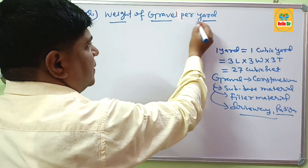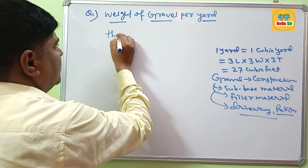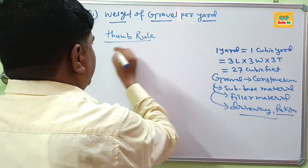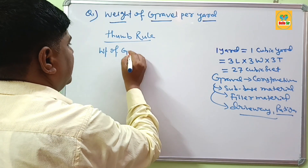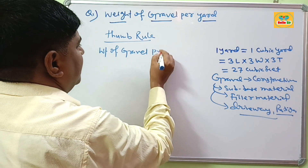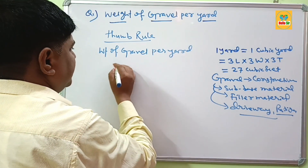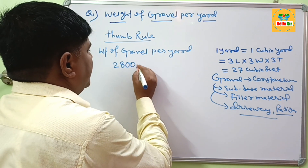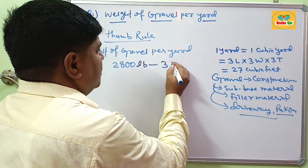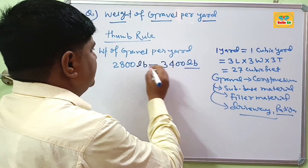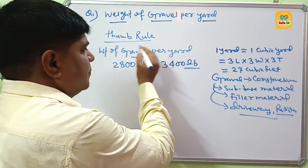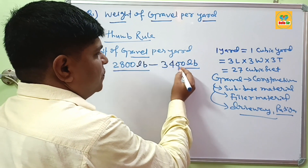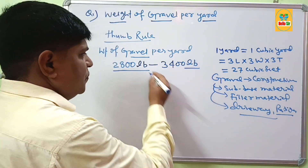In this video, we learn about the weight of gravel per yard. According to the rule of thumb, the weight of gravel per yard ranges between 2800 lb to 3400 lb. It means one yard of gravel weighs between 2800 lb to 3400 lb.